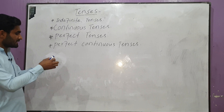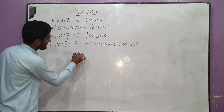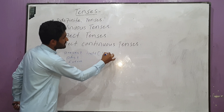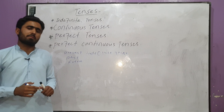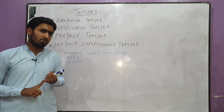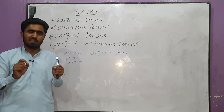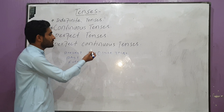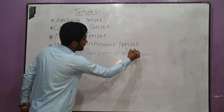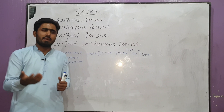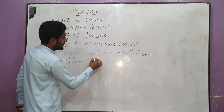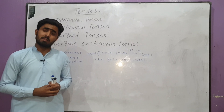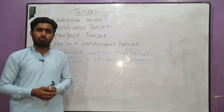We have present indefinite tense, then past indefinite tense, then future indefinite tense. For present indefinite tense, helping verbs are used. You need to understand tense helping verbs, tense verb forms, and tense structure. For present indefinite tense, we use the first form of the verb. We have simple sentences, negative sentences, and interrogative sentences. The helping verbs do and does are used in negative and interrogative forms.